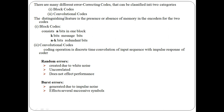Block codes and convolution codes — block codes are normally represented in n comma k notation, where n is the total size of the block, which includes k message bits and n minus k redundant bits or check bits. Convolution codes we will see later. While transmitting, many errors may happen, and these errors can be categorized into random errors and burst errors.